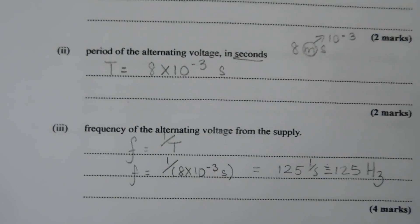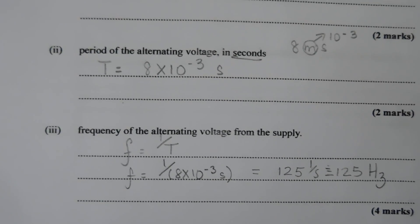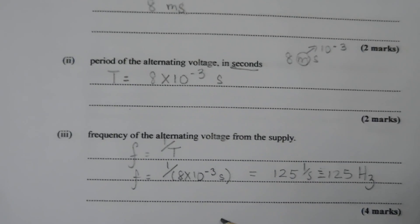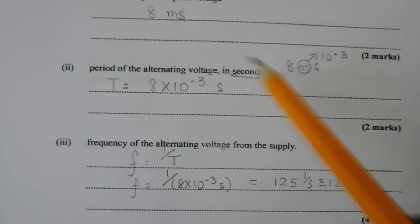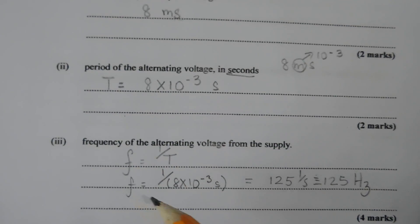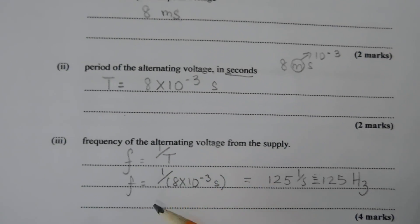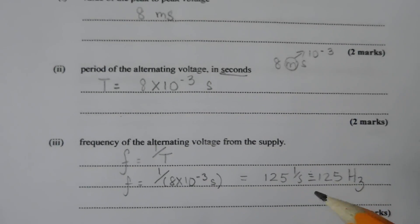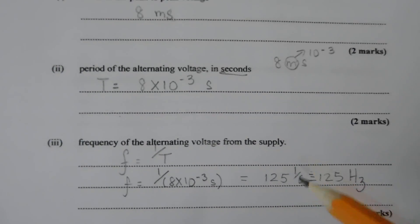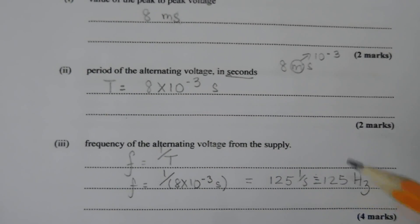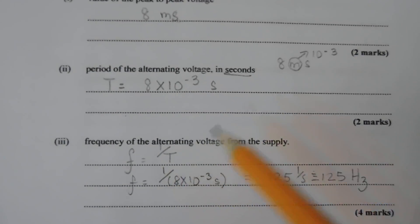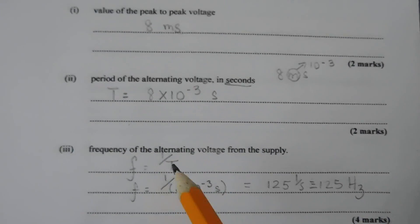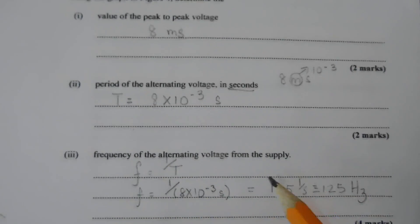Then it says, frequency of the alternating voltage from the supply. Frequency is equal to 1 divided by a period. So if I take the period that I have up here to find the frequency, it would be 1 divided by the frequency to give 125 per seconds, 125 hertz. Because per second is equivalent to 1 hertz. 1 hertz. Right? So pretty much, yeah. So that's the answer.